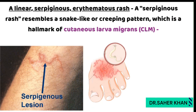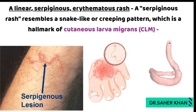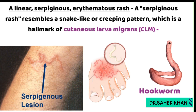The second clue is the linear serpiginous erythematous rash. Serpiginous rash means a snake-like or creeping pattern, and this is a hallmark of cutaneous larva migrans — a condition caused by parasites like hookworm. These rashes occur as the larva migrates just beneath the skin, creating a visible tract.